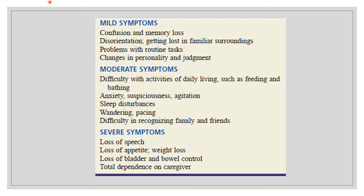The symptoms of Alzheimer's disease are divided into three stages: mild, moderate, and severe. In mild symptoms, patients present with confusion and memory loss, disorientation, problems with routine tasks, and changes in personality and judgment. In moderate symptoms, they present with difficulty with activities of daily living, anxiety, sleep disturbances, wandering, and difficulty recognizing family and friends. In severe symptoms, patients present with loss of speech, loss of appetite, loss of bladder and bowel control, and total dependence on a caregiver.